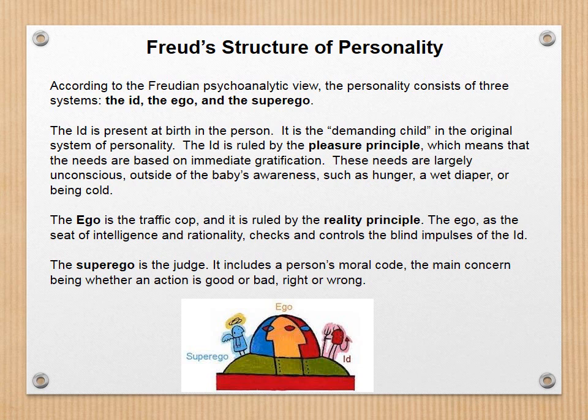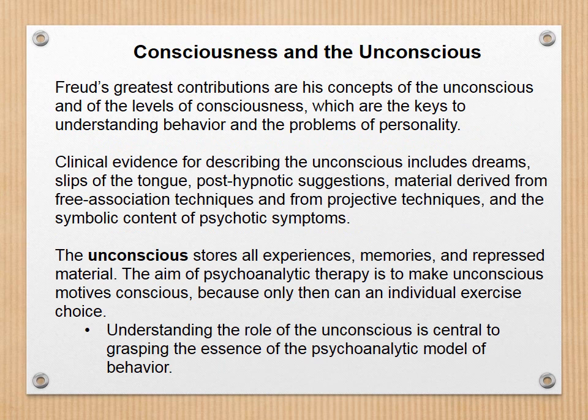The superego, which we develop much later as we grow older, is the judge. It includes a person's moral code — the main concern being whether an action is good or bad, right or wrong. So at age five or six, when you hit your little brother and your mom yells at you, your superego is learning what is considered okay and what is not okay.